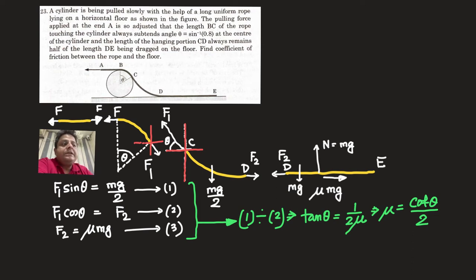As you know, E is the free end so tension at the free end is zero. Now tension at D is equal to F₂, and tension at C is equal to F₁.